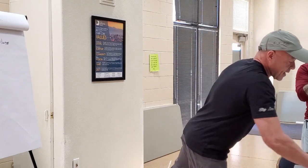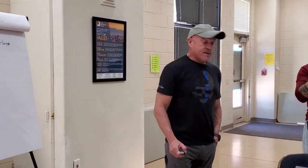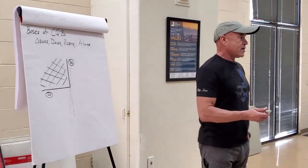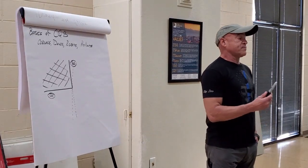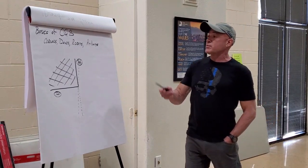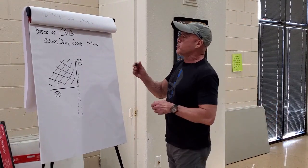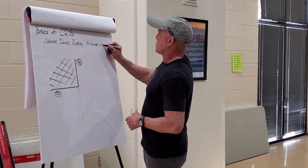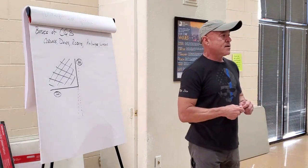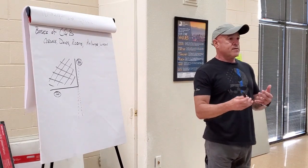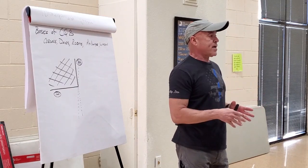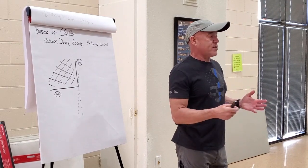The first thing we're going to talk about is a corner. There are the basics of CQB that apply to every building. Every building in the Western world and pretty much everywhere on Earth has these issues on the inside: corners, doors, rooms, hallways, and windows. By learning the characteristics of all of this, you can move through them quickly toward your objective without putting yourself at risk.